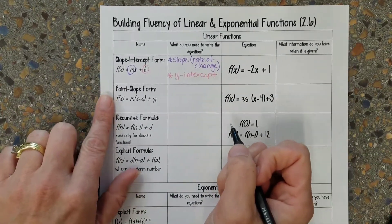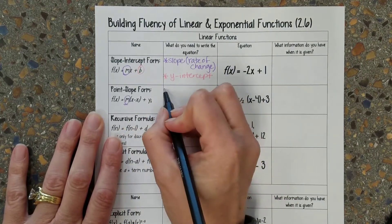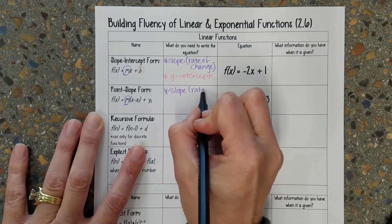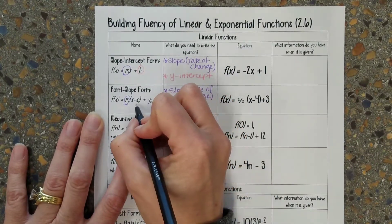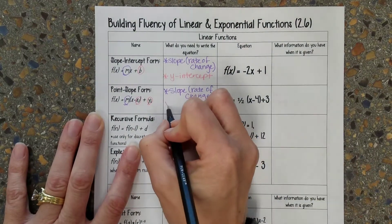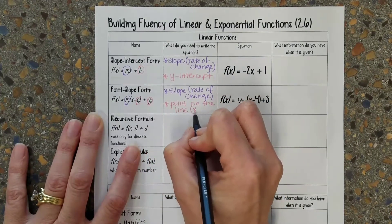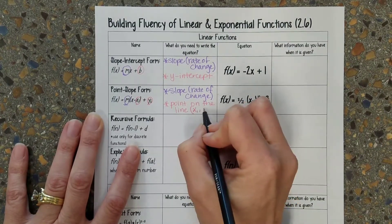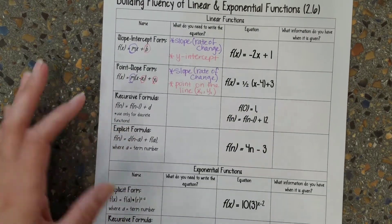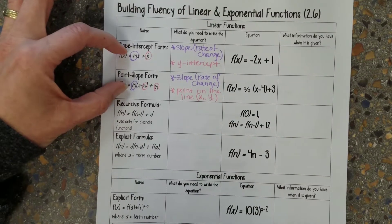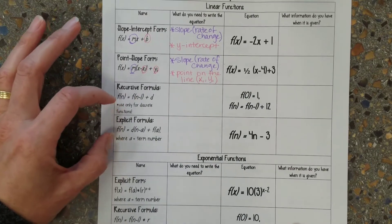The next one is point slope form, or the point slope formula. In order to write this equation, I again need the slope or the rate of change, and then I need a point on the line. When we have the point, the first number in the parentheses is our x sub 1 value, and the second is our y sub 1 value. These are the ones we concentrate on when we have functions — you can use this for either the functions themselves or if they're sequences.